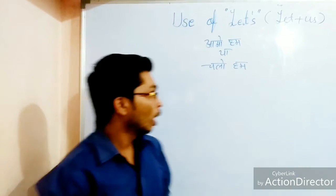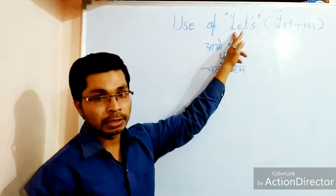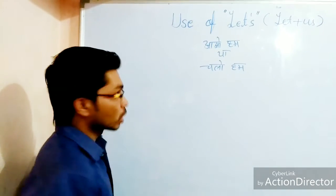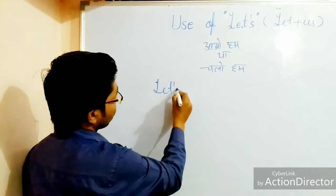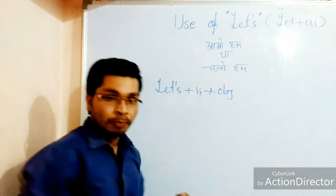First of all we use 'let's', then we want object. What will be the structure? Let's plus verb plus object.